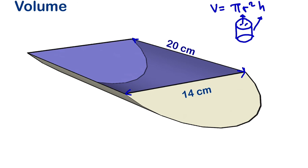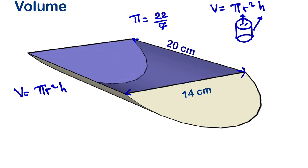Before we proceed, we should remember that π equals 22 over 7. So our formula for the volume of a semi-cylinder is π r squared times height, divided by 2. This means the volume will be equals to 22 over 7 times r squared times the height. The diameter is given, so the radius r is half of that, which gives us r equals 7.